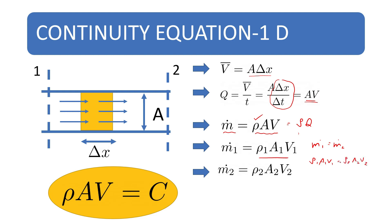Usually fluid is incompressible, so rho is constant. In this case, rho A V equals constant — whatever mass entering at section 1 is leaving at section 2. There is no mass stored inside for a steady flow. So for the one-dimensional continuity equation, rho into A into V equals constant. This is a simple conservation of mass equation.